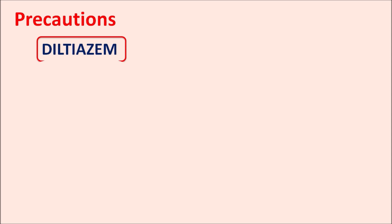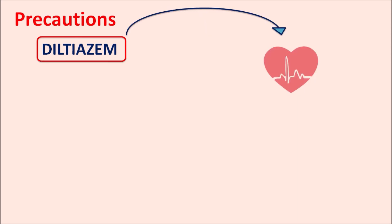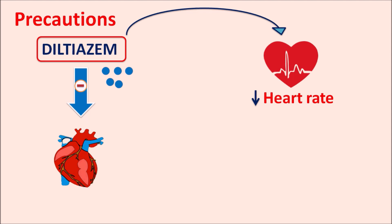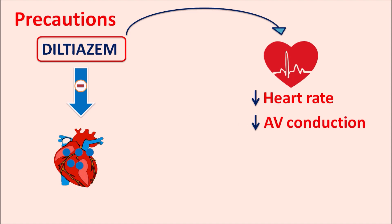Precautions: this drug can reduce the heart rate, producing bradycardia. It can also inhibit cardiac conduction — it blocks voltage-gated calcium channels on nodal cells, blocking calcium-mediated conduction at the AV node, reducing atrioventricular conduction. This increases the risk of second-degree or third-degree heart block, as the ventricles contract without synchronization with the atria, especially at increased doses.